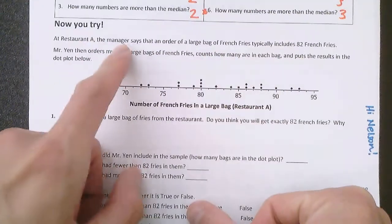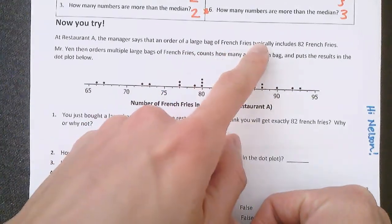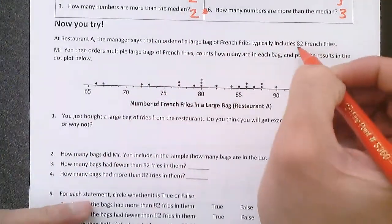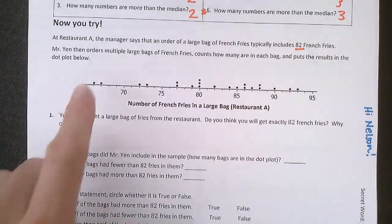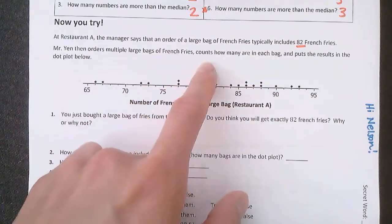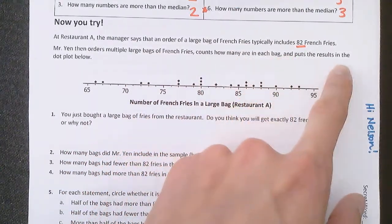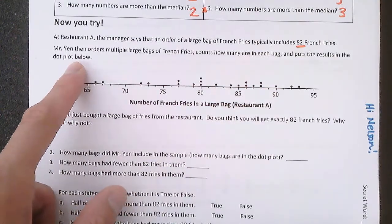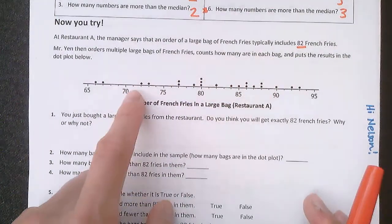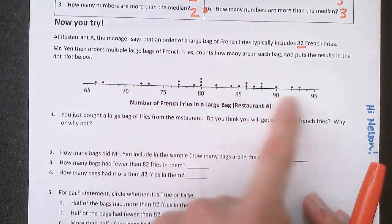Okay. Now let's look at the second part. At restaurant A, the manager says that an order of a large bag of french fries typically includes 82 french fries. Mr. Yen then orders multiple large bags of french fries, counts how many there are in each bag, and puts the results in the dot plot below. So I ordered a whole bunch of bags of french fries, and depending on how many were in each bag, I put it on the dot plot right here.